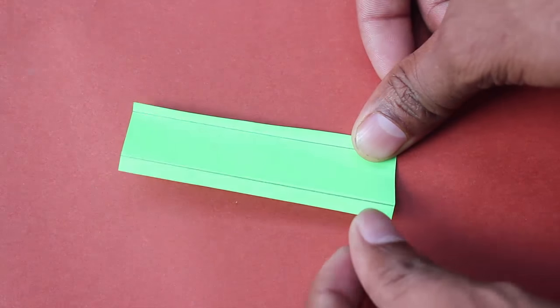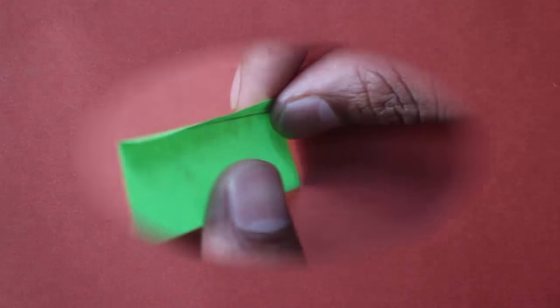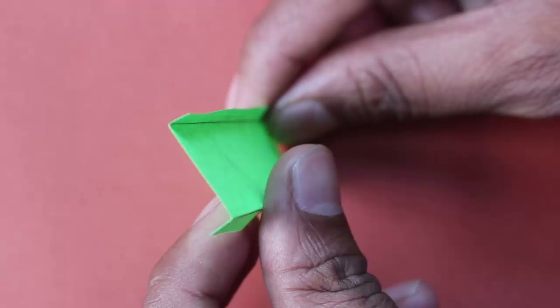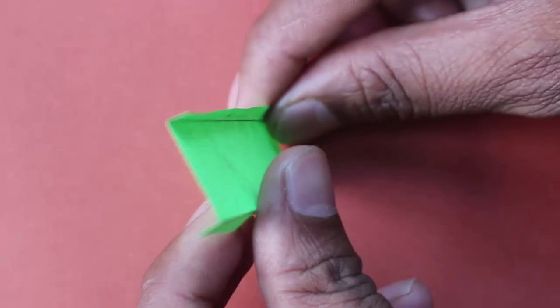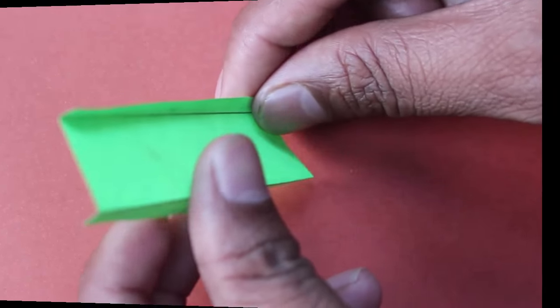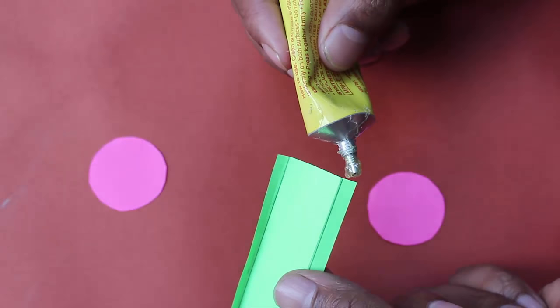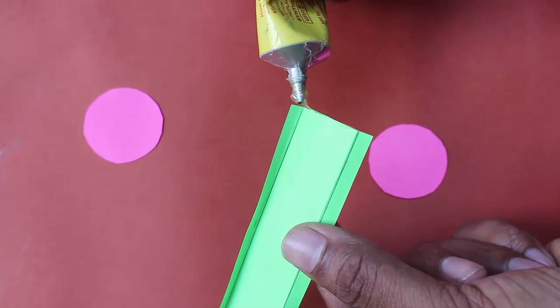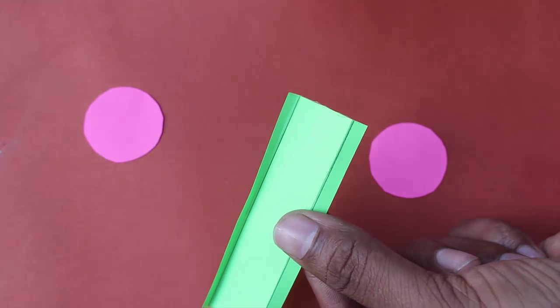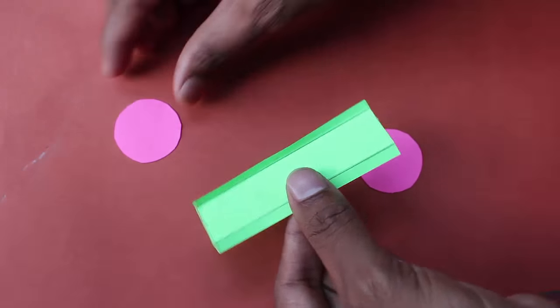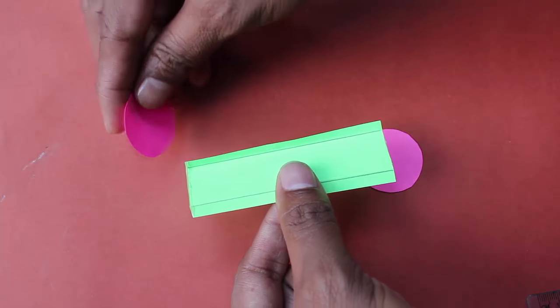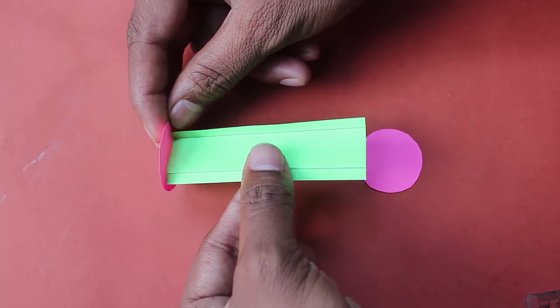Now apply glue on the short edges of the strip, and then stick paper circles on both ends which would be three centimeters in diameter.